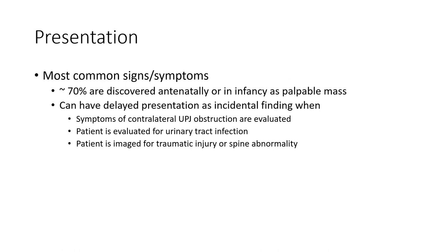Most common signs and symptoms: around 70 percent are discovered prenatally or in infancy, as prenatal care reforms can help earlier detection. Presentation includes incidental finding, symptoms of contralateral UPJ obstruction, evaluation for urinary tract infection, imaging for traumatic injury, or spinal abnormality.